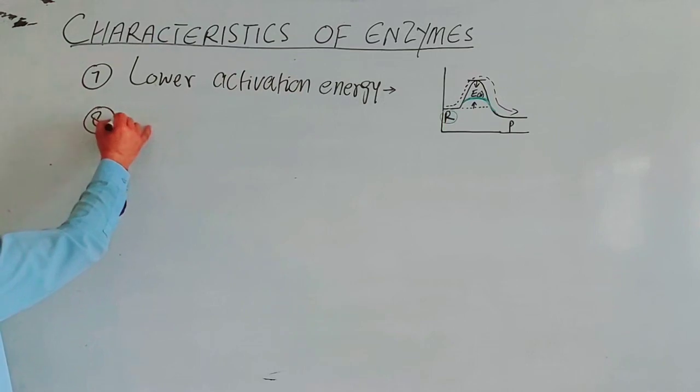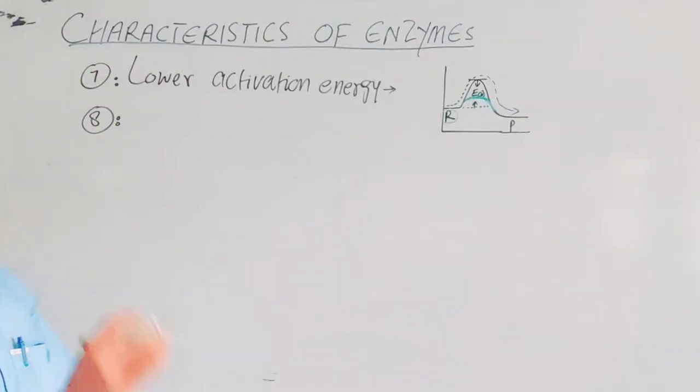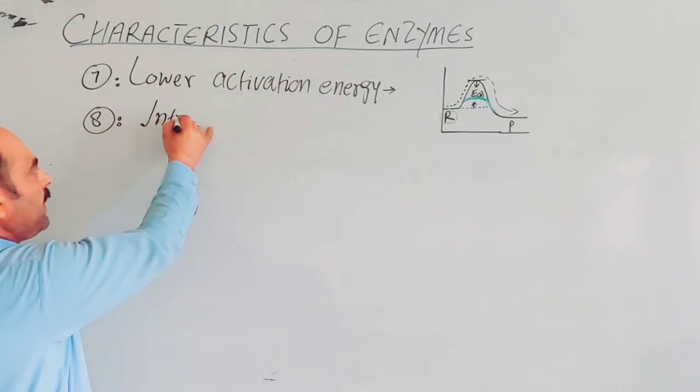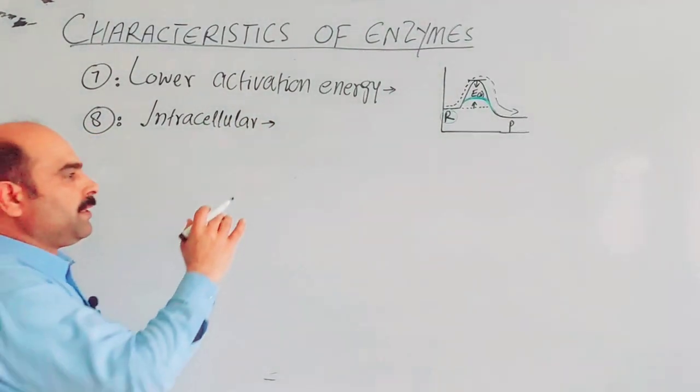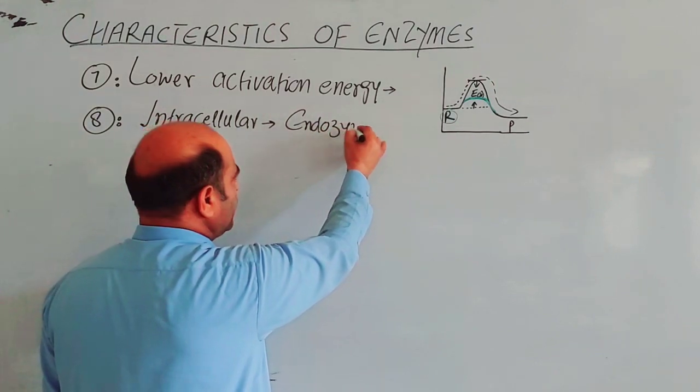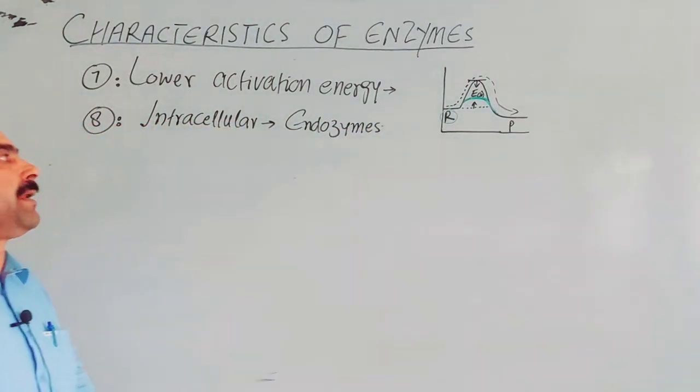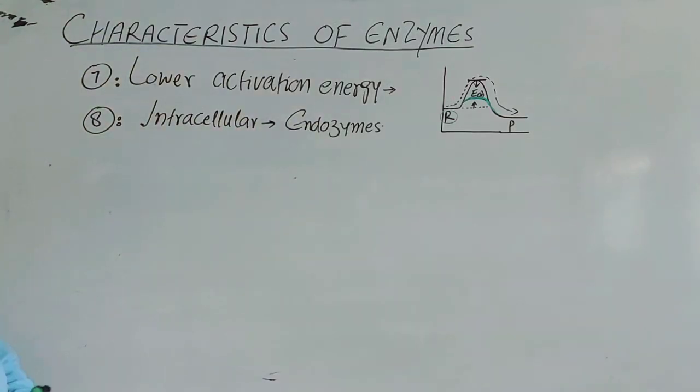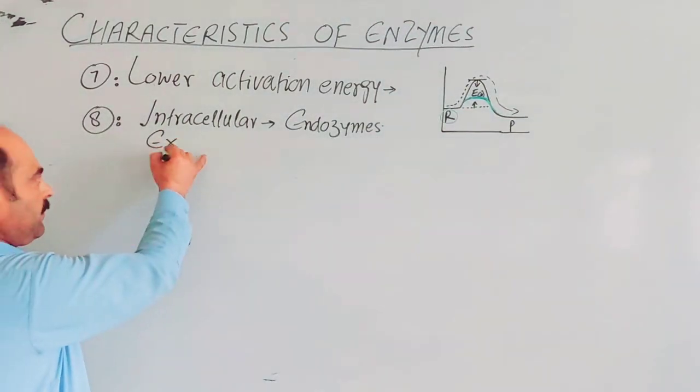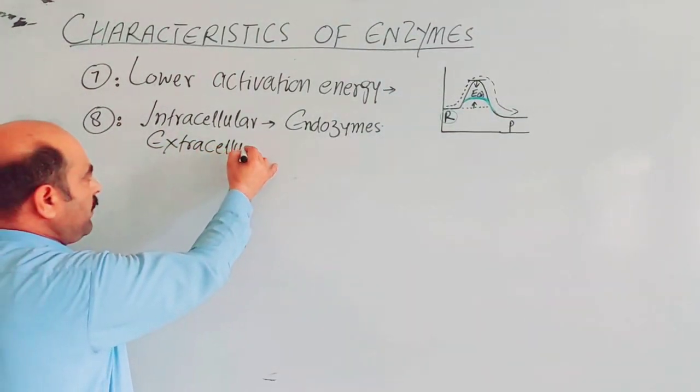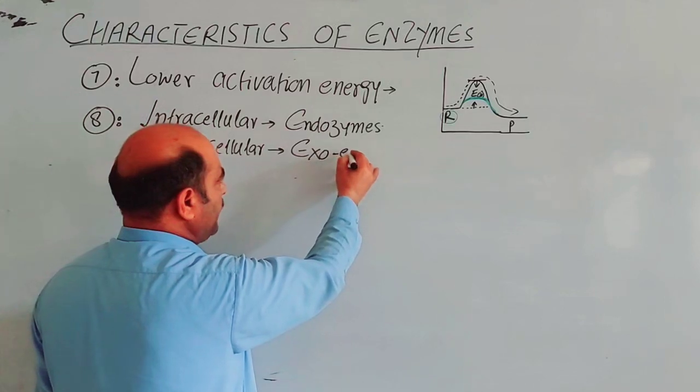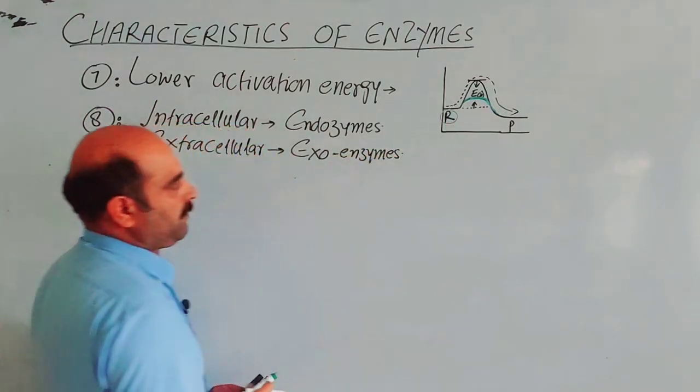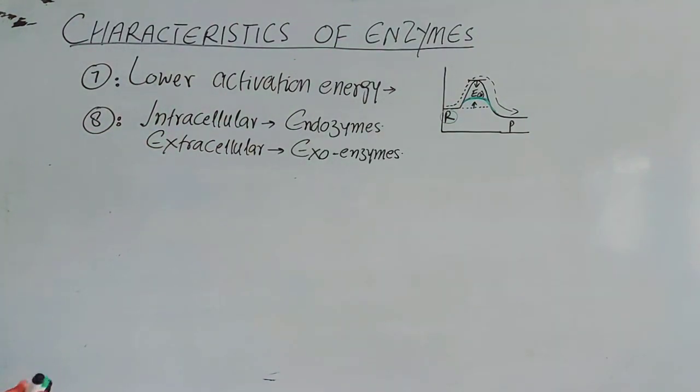Next property: enzymes work on biochemical reactions both inside cells and outside cells. Intracellular reactions—these are endozymes. Endozymes are enzymes which speed up biochemical reactions inside the cells. Another type is extracellular. Extracellular enzymes work outside the cells on biochemical reactions.